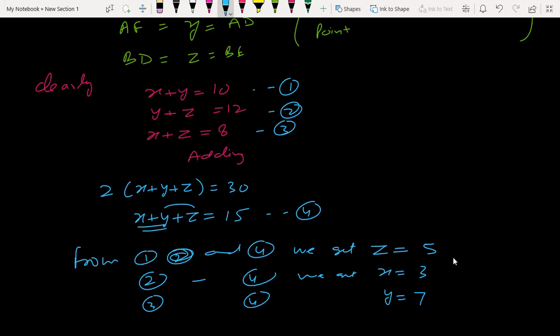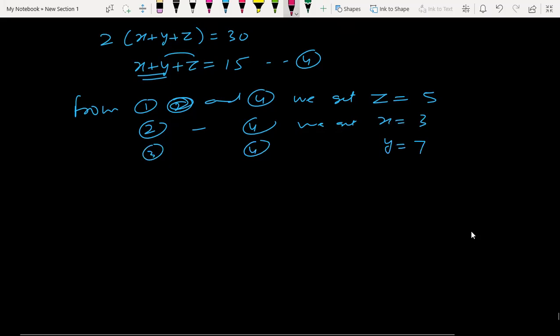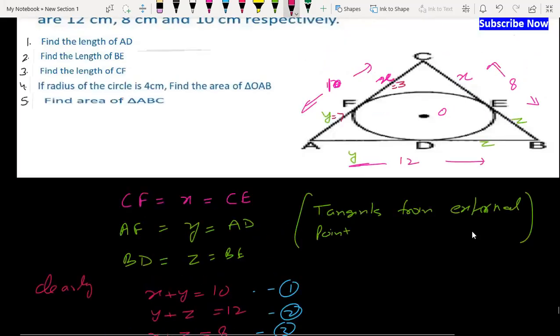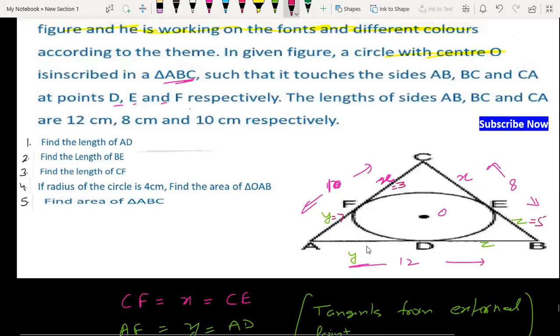So x, y, z is 3, 7, 5. So we can answer all questions. First part: length of AD - AD is y, so the length of AD is 7 cm.